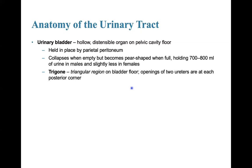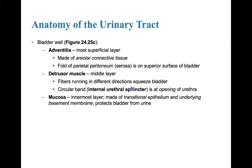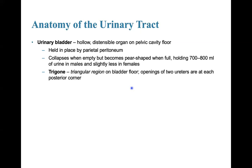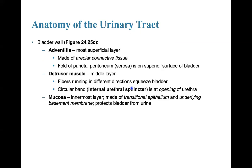The trigon is a triangular region on the bladder floor, with the openings of the two ureters at each of the posterior corners. The bladder has three primary layers: the adventitia — the most superficial layer made of areolar connective tissue; the detrusor layer — the middle layer, with fibers running in different directions to squeeze the bladder, with a circular band forming the internal urethral sphincter at the opening of the urethra; and the mucosa — the innermost layer made up of transitional epithelium and an underlying basement membrane to protect the bladder from urine.